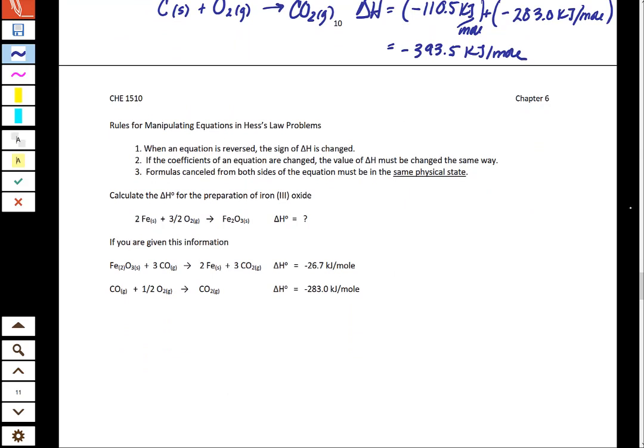So when we have a Hess's law problem, the way that you're going to know it's a Hess's law problem is you're going to be given a chemical reaction like this one. And then off to the side, it's going to have a delta H and say, I don't know what that delta H is. And what you're going to do is take the information that's given and manipulate it so that when you add those equations together, what you end up with is this, your goal equation.